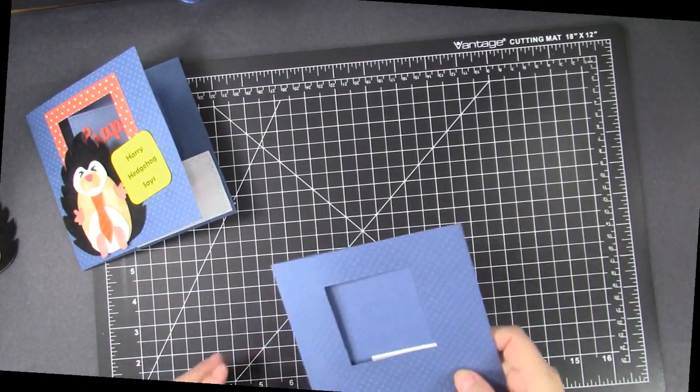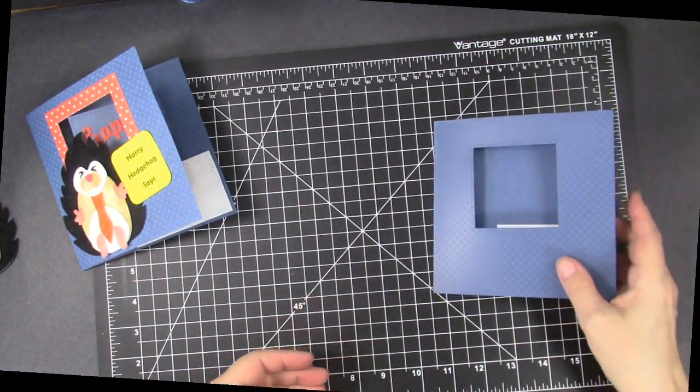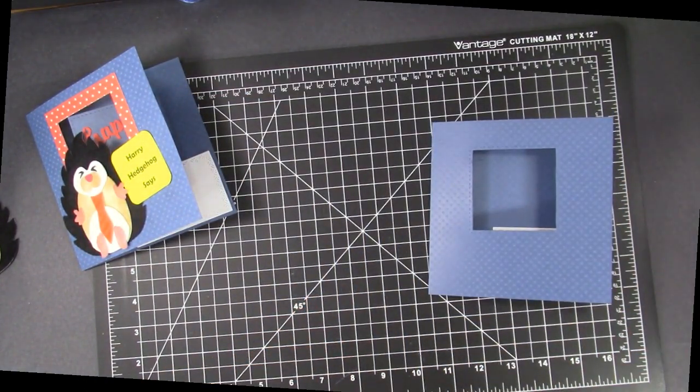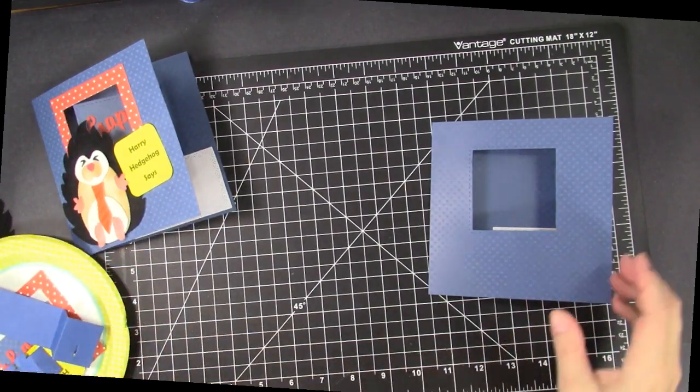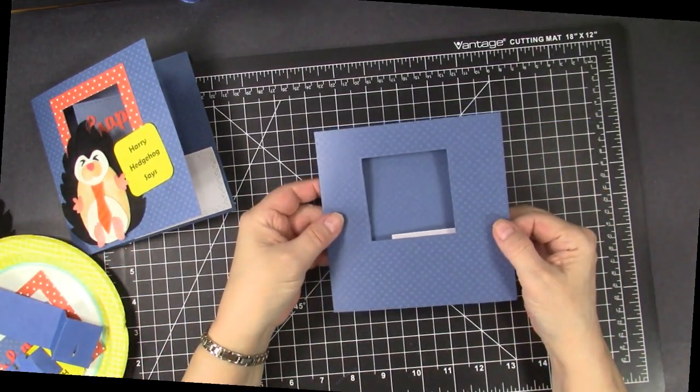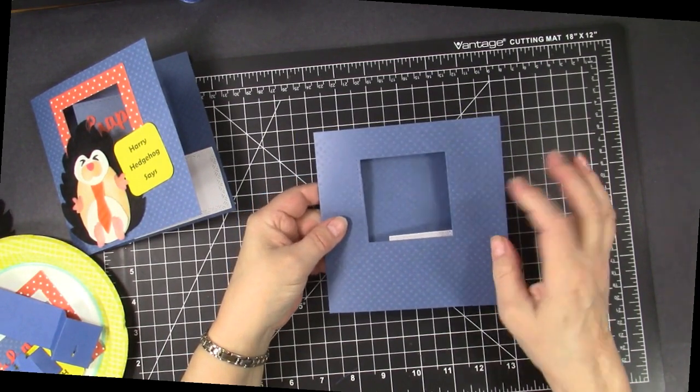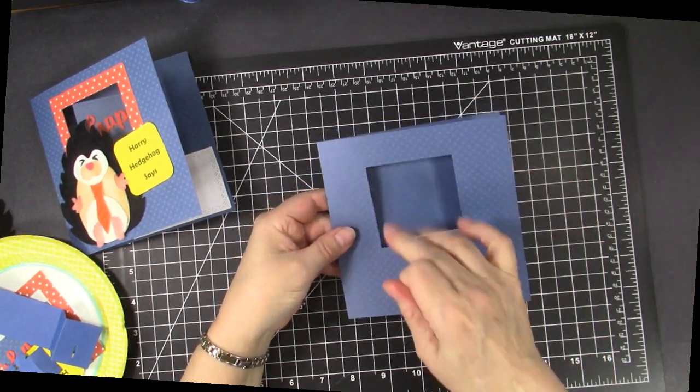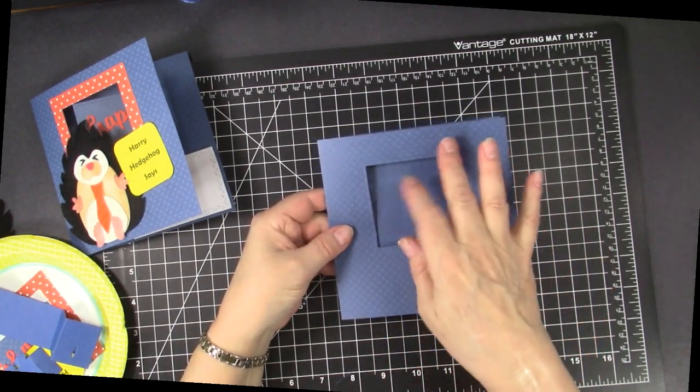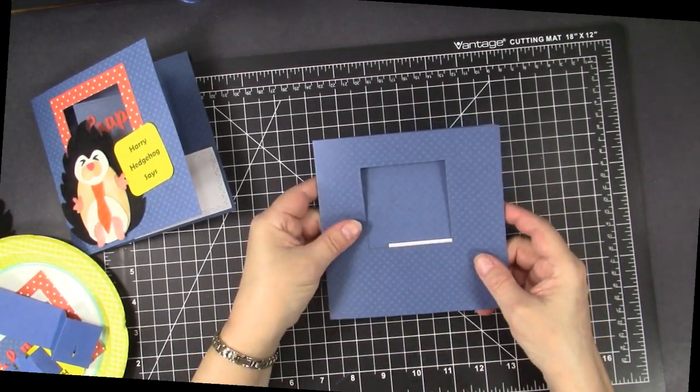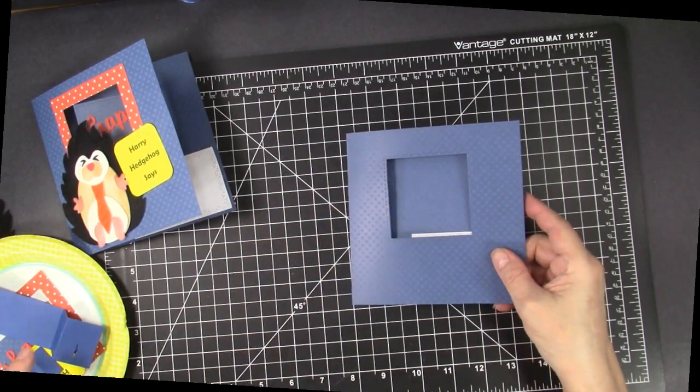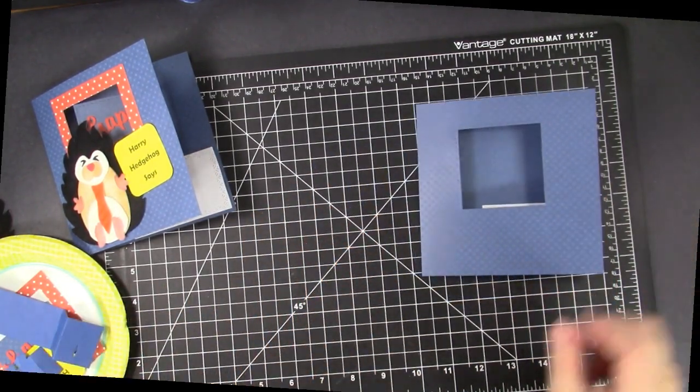We're going to set that aside for now and do the rest of the card. I have a five and a half by eleven cards base and I cut a square out of the front with a little inker die towards the top. And I have cut out some other pieces that I'll share with you in a minute.